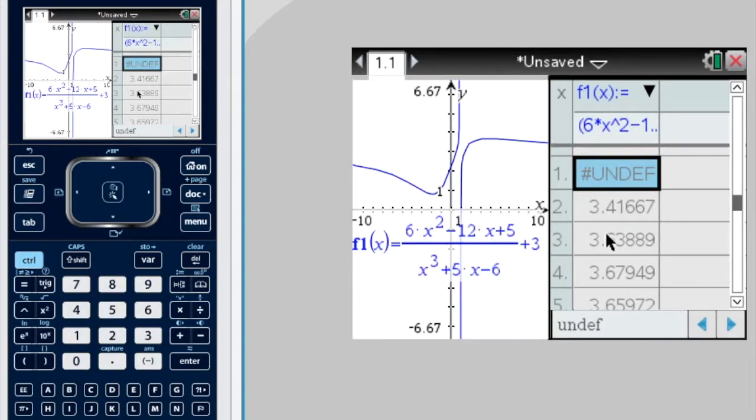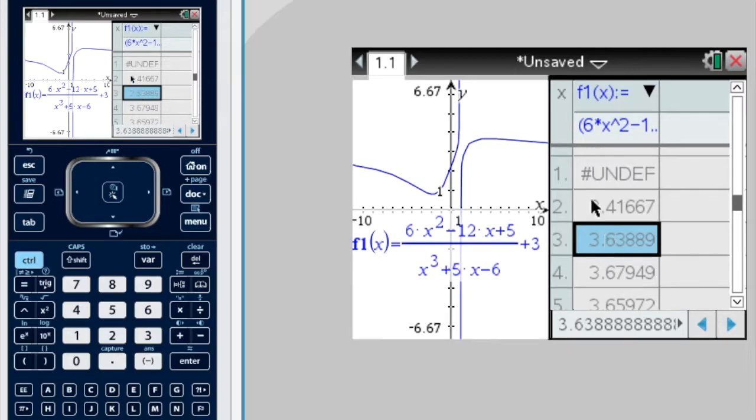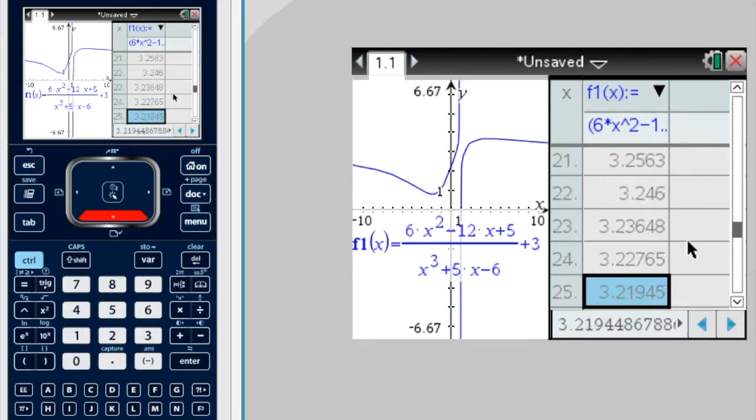Let's have a look what happens as x approaches infinity. So remember, this is the x values here, and these are the fx values, or y values. So if I go down, what's happening? I'm getting closer and closer to 3.